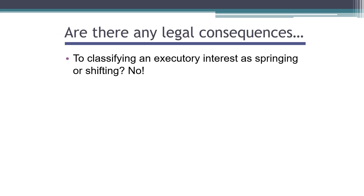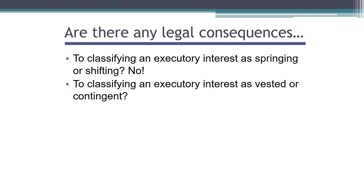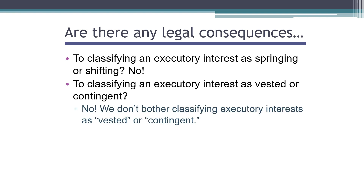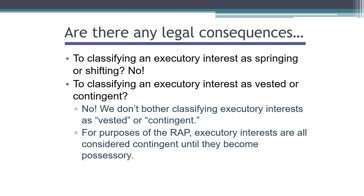Are there any legal consequences to classifying an executory interest as springing or shifting? No — there really are no consequences at all that turn on that distinction. It's just a helpful way of describing the two kinds of executory interests. We might also ask: is there any legal consequence to classifying an executory interest as vested or contingent? The answer is no. In fact, we don't bother classifying executory interests as vested or contingent. For purposes of the rule against perpetuities, which we'll cover in the next video, executory interests are all considered contingent as long as they're still future. Until they become possessory, they're treated as all being contingent — but we don't bother slapping the label of vested or contingent on an executory interest as we do a remainder.